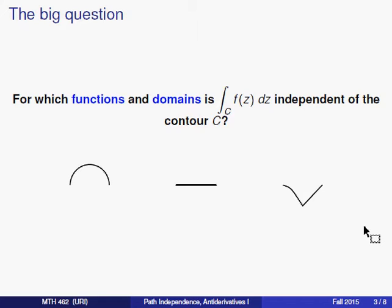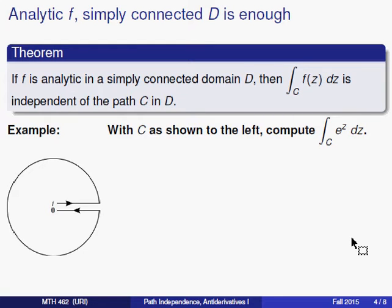So the big question we want to ask is, for which functions, and in which types of domains, is the integral of f of z independent of the contour c that you follow? Well, let's examine this question, and let's take a look at the types of functions and domains that we've been discussing recently. We'll find that in these cases, the integrals will be path independent. Specifically, if f is an analytic function, and the domain that your contours lie in is simply connected, then the value of the integral of f along the contour c is actually independent of the path c you take.